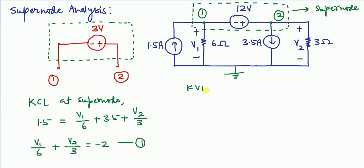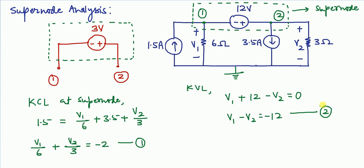Now we apply KVL, which gives the relation between V1, V2, and the voltage source. Starting with a rise in voltage V1, then a rise of 12 volts, then a drop of V2, giving the equation V1 − V2 = −12. This is the second equation. By solving the two equations, we get V1 = −12 volts and V2 = 0 volts.